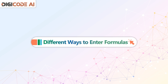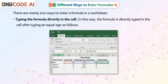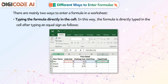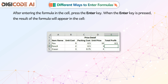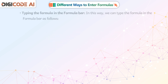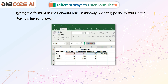Different ways to enter formulas. There are mainly two ways to enter a formula in a worksheet. The first is typing the formula directly in the cell. In this way, the formula is directly typed in the cell after typing an equal sign, as follows. After entering the formula in the cell, press the Enter key. When the Enter key is pressed, the result of the formula will appear in the cell.